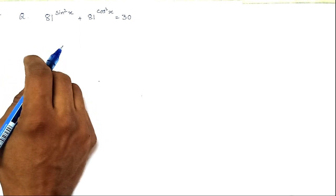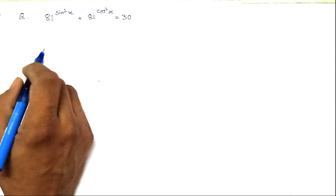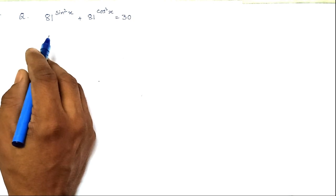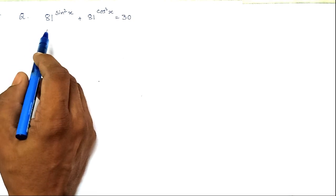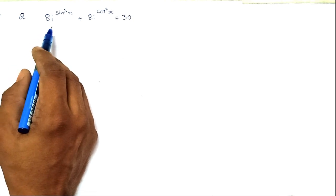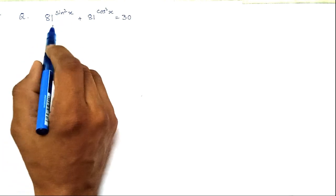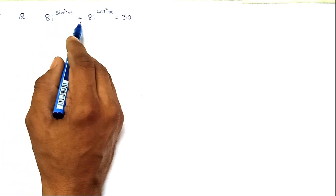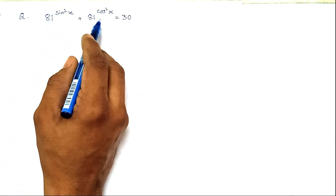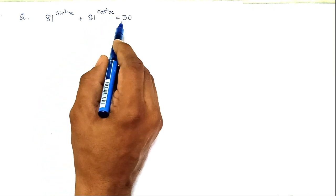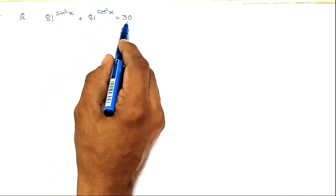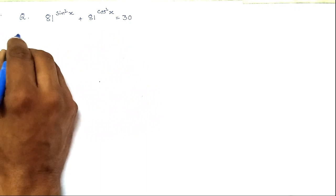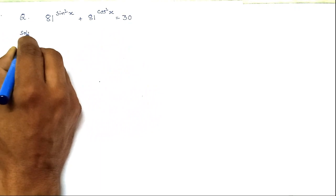Welcome to today's class. Today's problem is a mix of trigonometry and algebra. The expression is: 81 to the power sin²x plus 81 to the power cos²x is equal to 30. We will see how to solve this step by step.